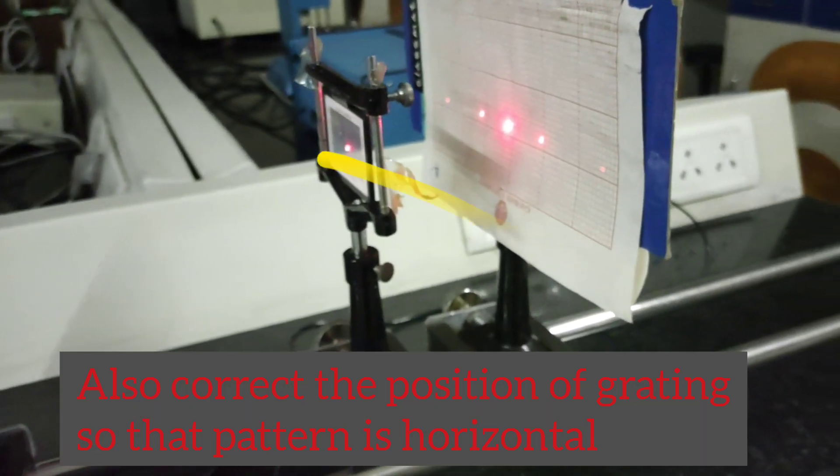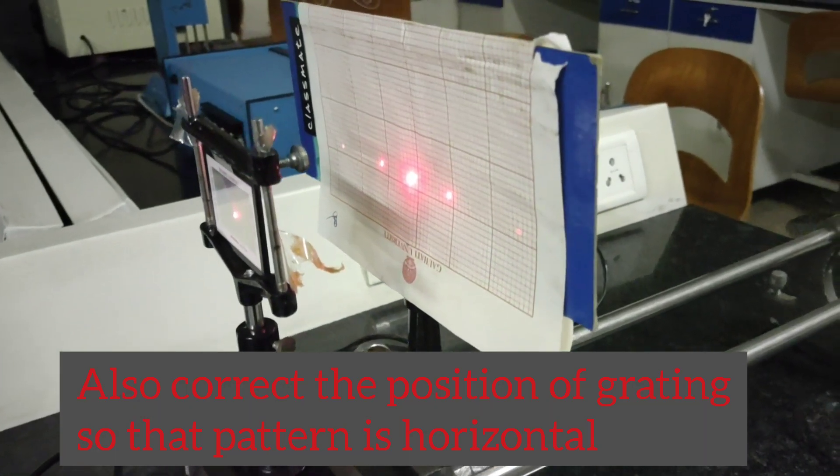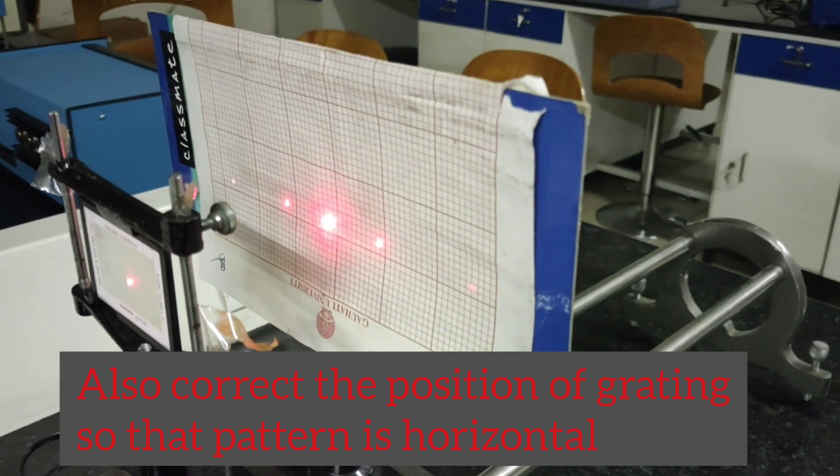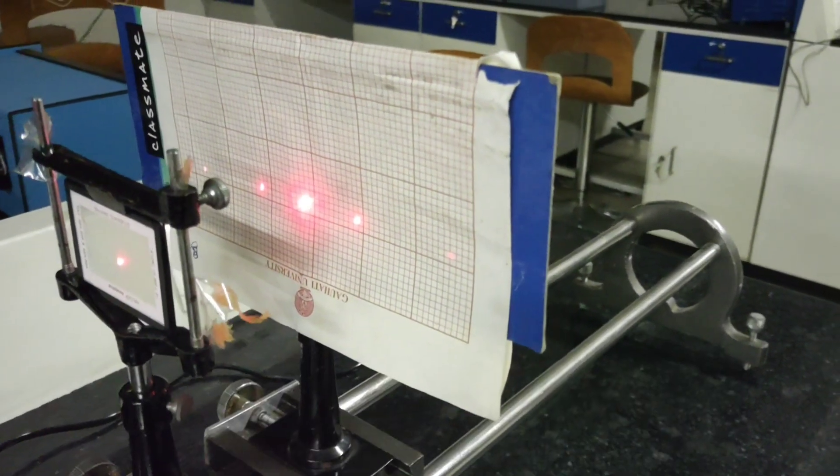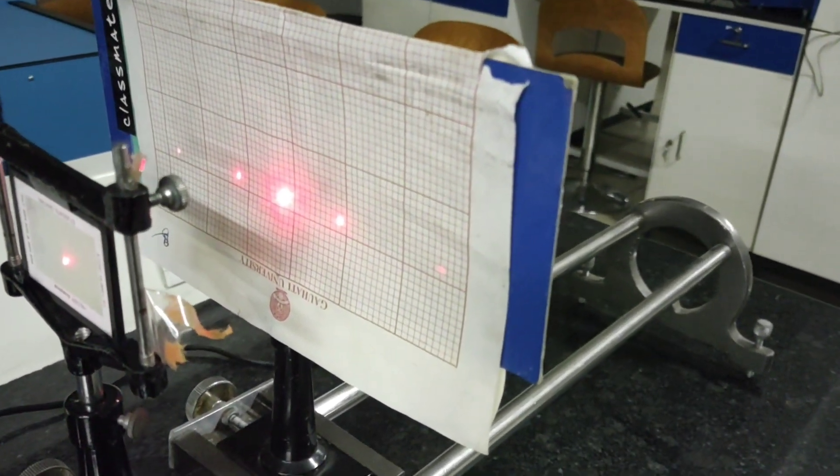We adjust the height such that the pattern is visible on the screen. We also correct the position of the grating by rotating it so that the pattern is horizontal on the screen.